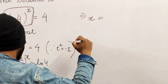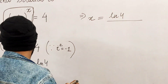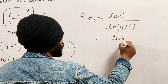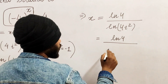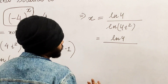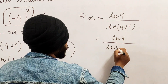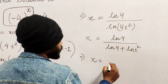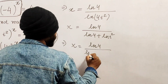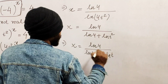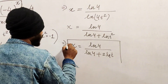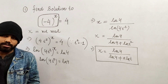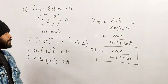Then x = ln(4) / ln(4i²). After a little bit of simplification, ln(4i²) = ln(4) + ln(i²), so x = ln(4) / (ln(4) + 2·ln(i)). This is the final solution, which is of course not real. That's the only solution we got. Now let's solve the second question.